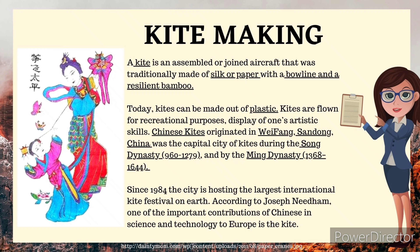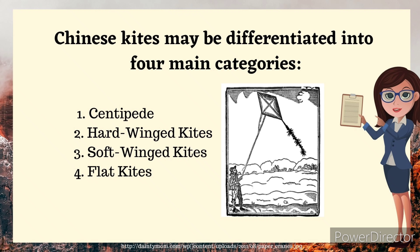Chinese kites originated in Weifang, Shandong, China, the capital city of kites during the Song Dynasty (960–1279). Since 1984, the city has been hosting the largest international kite festival on earth. According to Joseph Needham, one of the important contributions of China in science and technology to Europe is the kite. Chinese kites may be differentiated into four main categories: 1) centipede, 2) hard-winged kites, 3) soft-winged kites, and 4) flat kites.